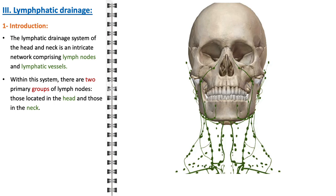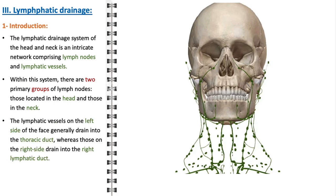The neck lymph nodes, including the cervical lymph nodes, are further subdivided into deep and superficial groups, playing a crucial role in managing lymph from the neck, pharynx, and thyroid region. The lymphatic vessels accompanying these nodes have a distinct routing: vessels on the left side of the face generally drain into the thoracic duct, the largest lymphatic vessel in the body, which empties into the cardiovascular system near the junction of the left subclavian and left jugular veins. Conversely, those on the right side drain into the right lymphatic duct, which empties at the junction of the right subclavian and right jugular veins.